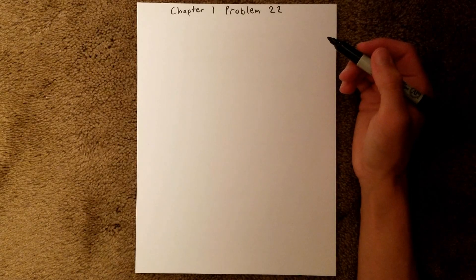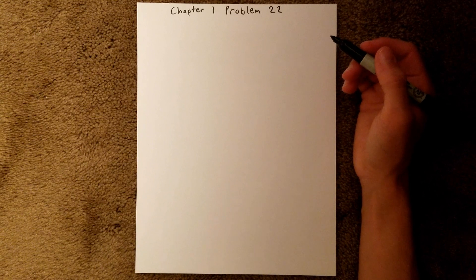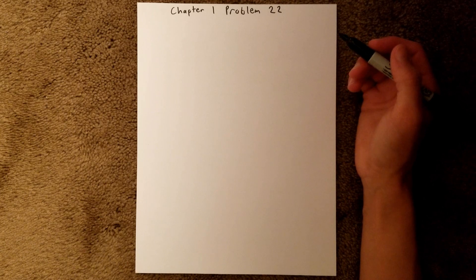What is going on YouTube? Just helping you out here. And for today's video, I'll be doing Chapter 1, Problem 22 in the Quantitative Chemical Analysis, 9th edition, by Daniel C. Harris.